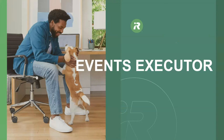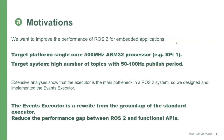Let me start by analyzing why we created a new executor and what our target system is. At iRobot, we are looking into the performance of ROS2 for embedded applications on Linux devices with very limited processing capabilities. Our target platform is a single-core 500 MHz ARM32 processor, similar to a Raspberry Pi 1. We are mostly concerned about topics with a very high publish rate, like 50 or 100 Hz, even if the payload transmitted at this frequency is not that large.